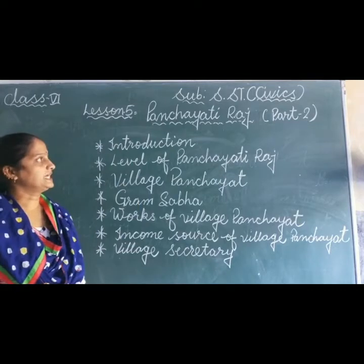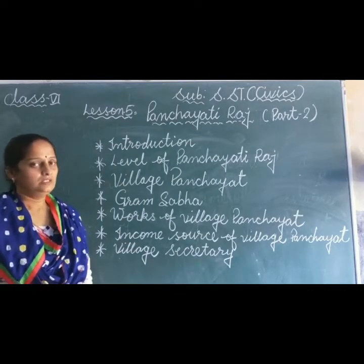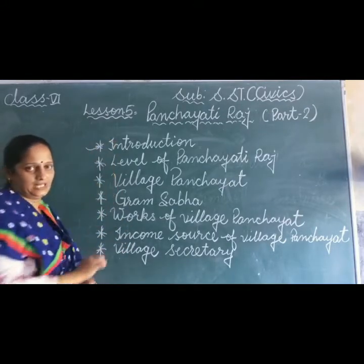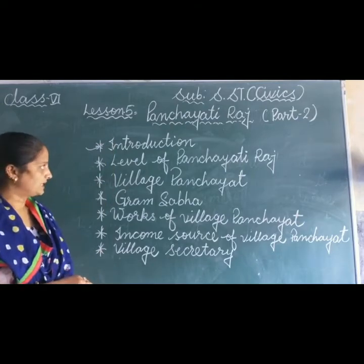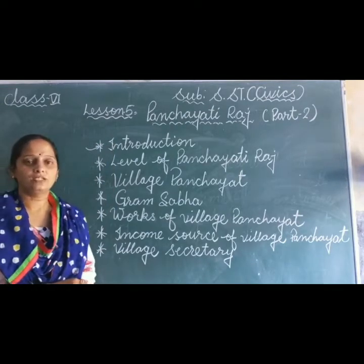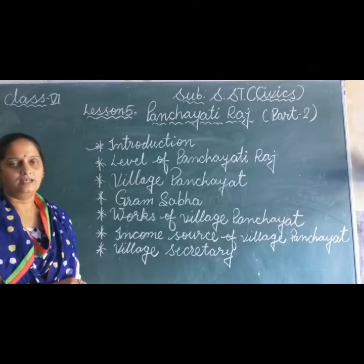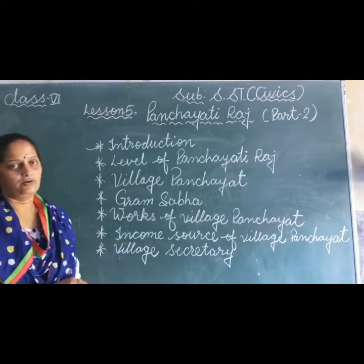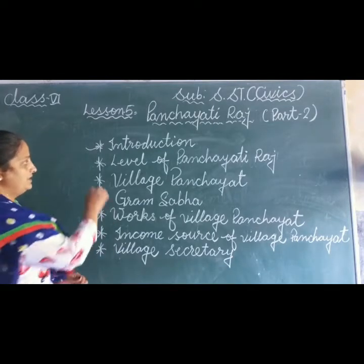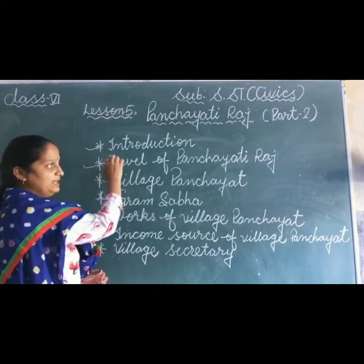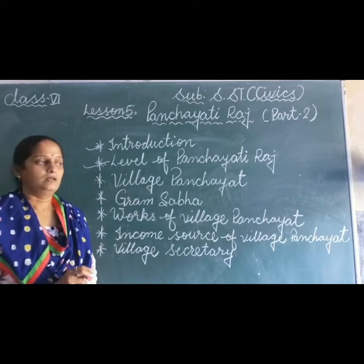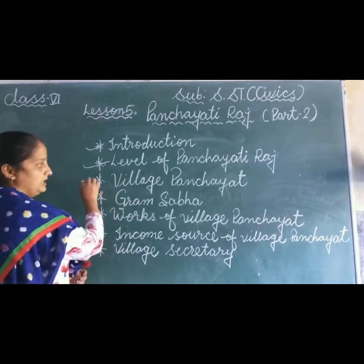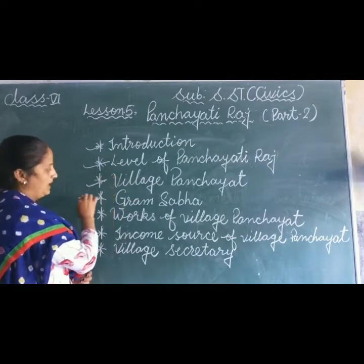Today we will read Panchayati Raj System Part 2. In the first video, we learnt about the introduction of Panchayati Raj — what is Panchayati Raj. Panchayati Raj System was first introduced in India in April 1993, and Nagaur, Rajasthan is the first place where elections were held for Panchayati Raj. We also learnt about the three levels of Panchayati Raj: Village Panchayat, Panchayat Samiti, and Jila Parishad. We also learnt about the Village Panchayat and Gram Sabha.